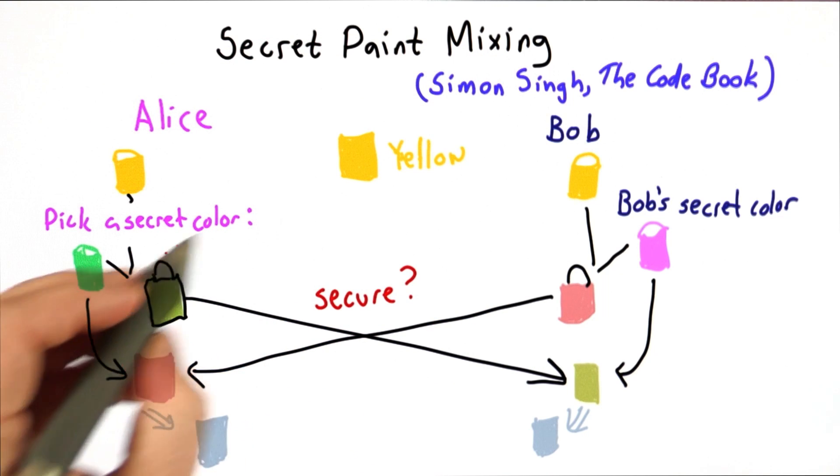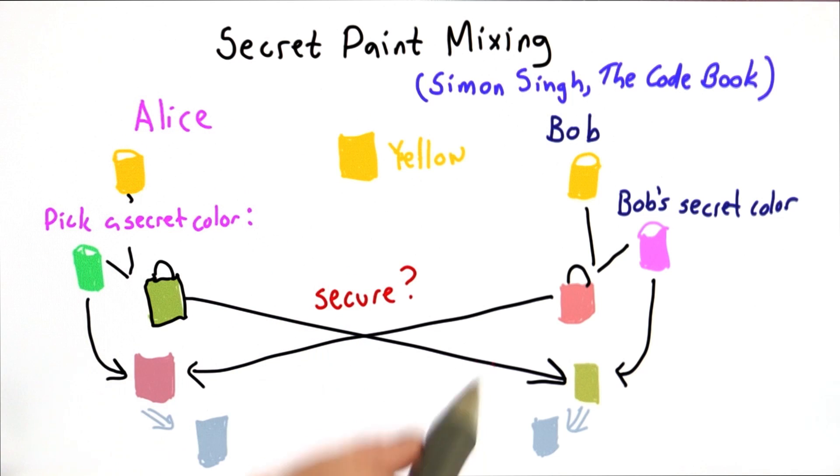It would be secure if someone who knew yellow and could intercept these two transmissions couldn't guess the secret colors. This assumes that paint unmixing is impossible. Probably not a very good assumption, and certainly not a practical way to actually do this.